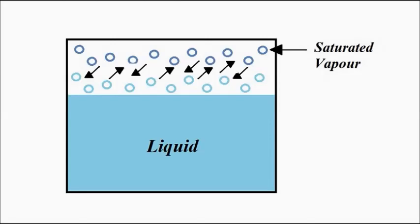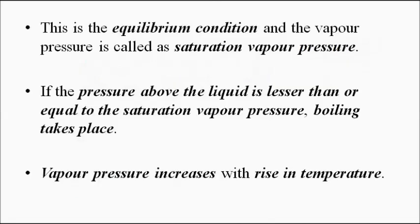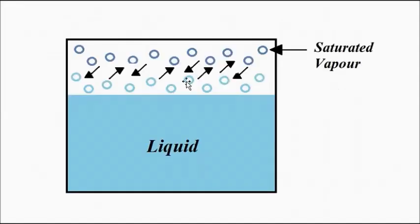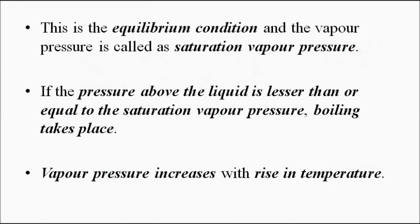If the pressure above the liquid is less than or equal to its saturation vapor pressure, boiling of the liquid will take place. This is how vapor pressure or saturation vapor pressure affects the rate of conversion of liquid to vapor and vapor to liquid. The saturation vapor pressure increases with a rise in temperature.